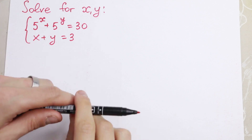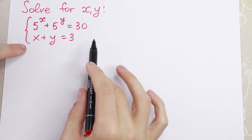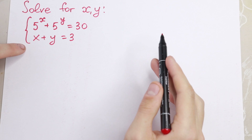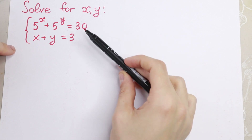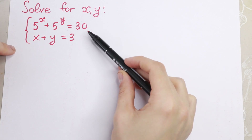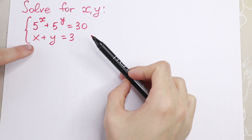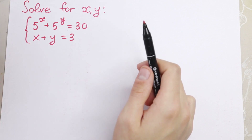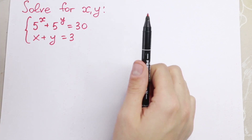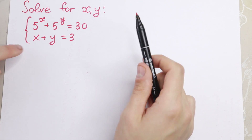Hello everyone and welcome back to my channel. In this video we are going to solve this interesting system of equations. We have 5 to the power x plus 5 to the power y equal to 30, and x plus y equal to 3. And we need to find x and y.